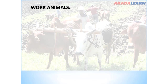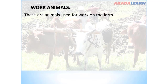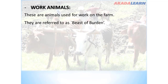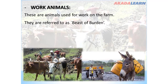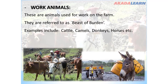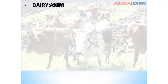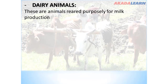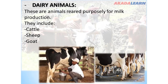Based on their classes, we shall look at them. Number one: work animals. Work animals are animals used for work on the farm; they are referred to as beasts of burden. Examples include cattle, camels, donkeys, horses, and many more. The next type is dairy animals — animals that are purposely kept for milk production. They include cattle, sheep, goats, and probably camels.